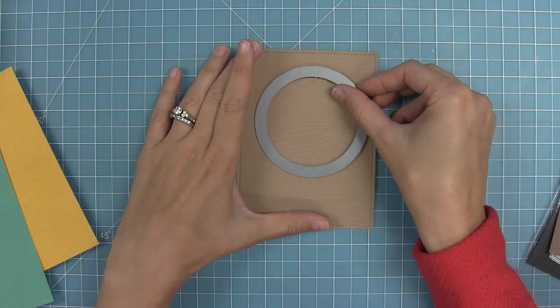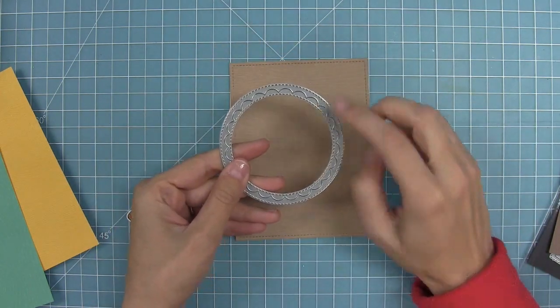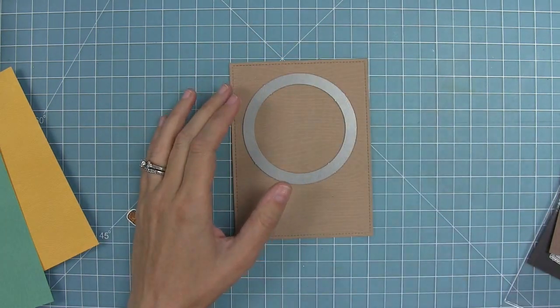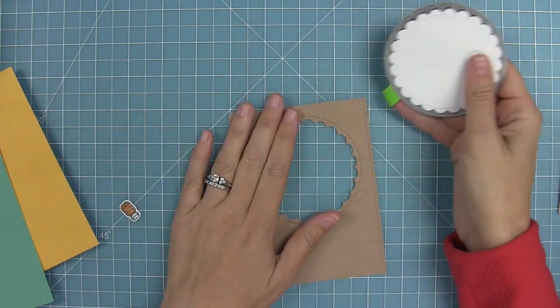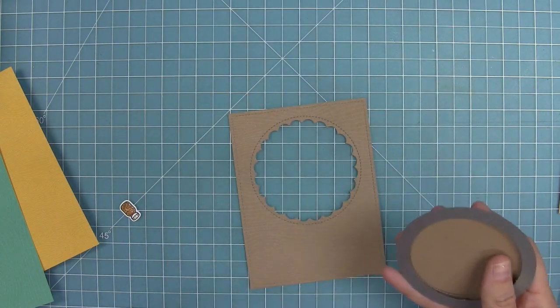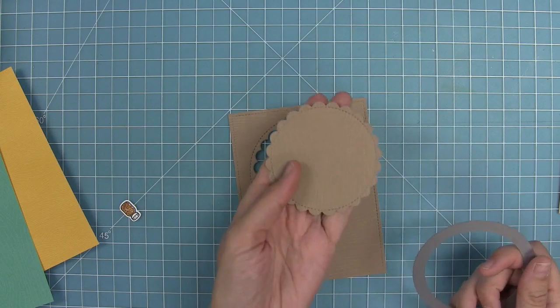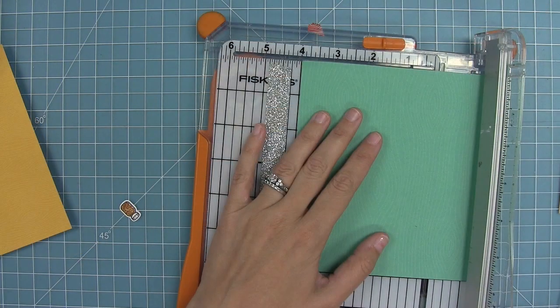Then next I'm going to use my brand new outside in stitch scallop circle here to die cut an opening from this cardstock. So you can see how beautiful that stitched opening is and then I'm left with a really cute little stitch scallop circle that I can use for something else.